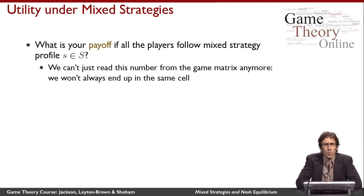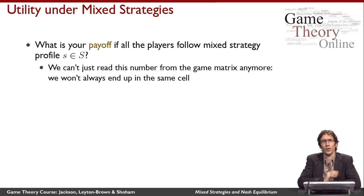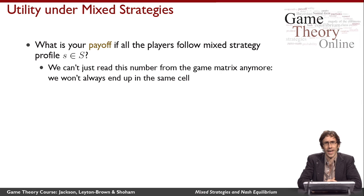Now I have the problem that I've elaborated my definition of strategies to include not just the finite set of things players can do, but the infinite set of all probability distributions over these finite sets. The problem is I only have a utility definition for action profiles. Under a mixed strategy with a support of size greater than one, I won't always end up in the same cell of the matrix.